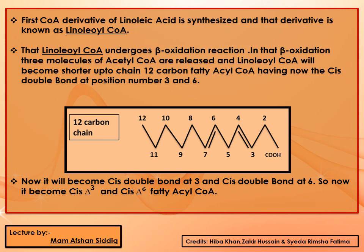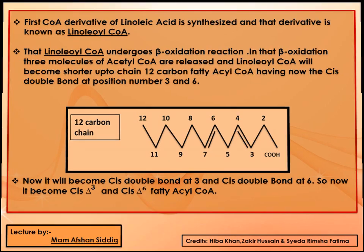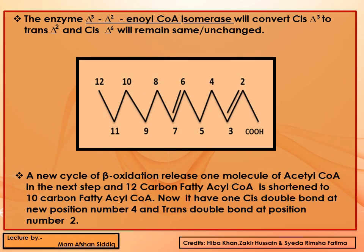There is an enzyme — delta-3, delta-2 enoyl-CoA isomerase — that converts cis-delta-3 to trans-delta-2, while the cis-delta-6 remains unchanged.